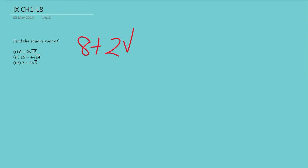For that you need to know two basic algebraic formulas: the formula for (a + b) whole square and (a − b) whole square, which is equal to a² + b² + 2ab and a² + b² − 2ab respectively. Since we have a plus sign here, we are going to use the (a + b)² formula.